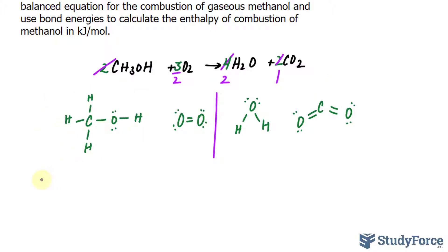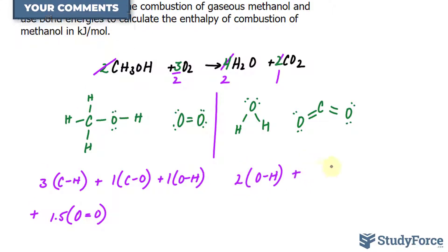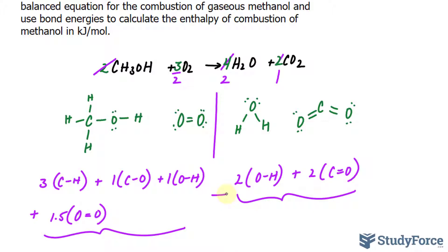Here's what I mean. Starting over here, we have three CH bonds plus one CO bond plus one OH bond. We will add that to 1.5 times, because 3 over 2 is 1.5, the number of double bonded oxygen. Eventually, we'll find the sum of these energies, but let's set this one up. We have two OH bonds plus two C double bonded oxygens. So we'll find the sum of these, we'll find the sum of these, and subtract the two sums.